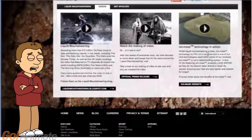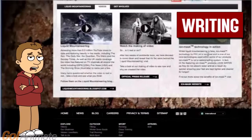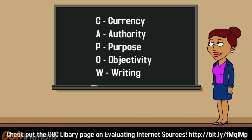The last thing you need to check is writing style, and I think we can both agree there was precious little of that on that blog. So there you have it: currency, authority, purpose, objectivity, and writing style. Kapow!